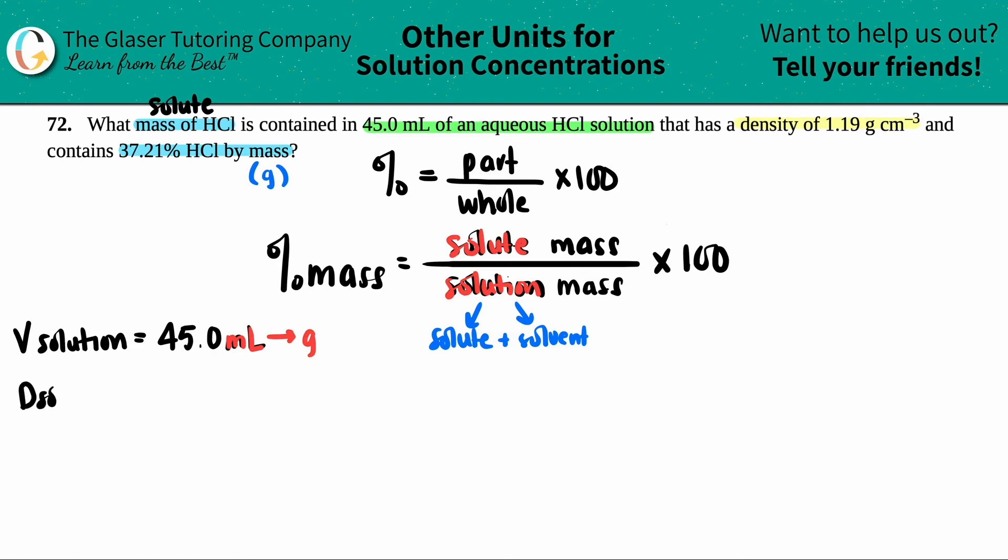The density of the solution is 1.19, and this is grams per centimeter cubed. But now, whoa, whoa, whoa, whoa, whoa. We have mL, right? If we're using this formula, the grams is going to be the mass that we are going to get out. And technically centimeters cubed is the volume, but I have mL. I don't have centimeters cubed. But here is the thing, guys. If you're talking about aqueous solutions, which basically means that you're in water, that's the solvent, your water.